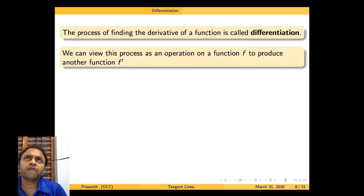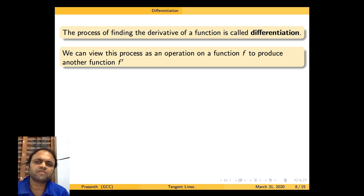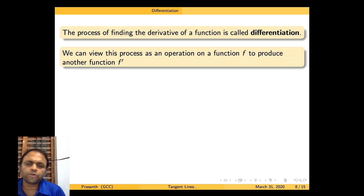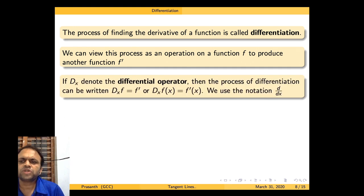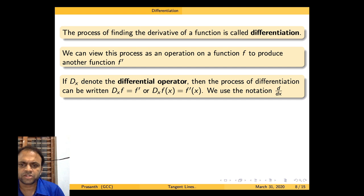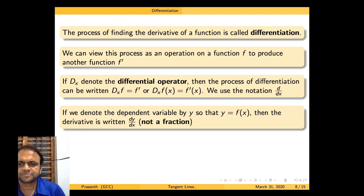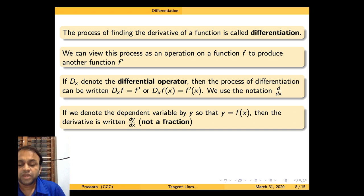The process of finding the derivative of a function is called differentiation. After finding the derivative, you get another function, so we can consider differentiation as an operation on a function f to produce another function f'. Some books use d_x to denote the differential operator. The process can be written as d/dx(f) equal to f', or d/dx(f(x)) equal to f'(x). We use the notation d by dx. Remember that dy/dx is not a fraction — it is a limit.